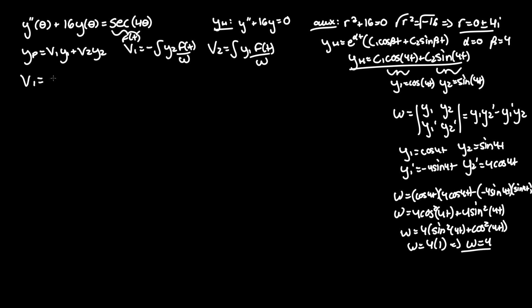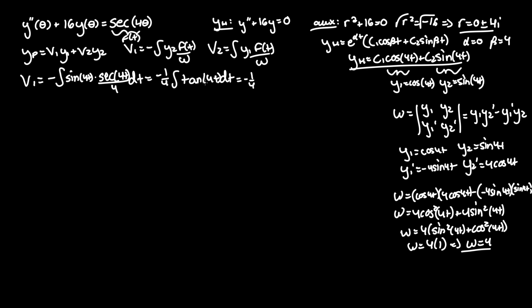Now for v1: v1 equals the negative integral of y2, which is sine of 4t, times f of t, which is secant of 4t, over the Wronskian of 4 dt. We'll let t equal theta since it's easier to work with t and substitute back at the end. This equals negative one-fourth integral of sine 4t over cosine 4t, which is the same as tangent of 4t. For the integral of tan of 4t, bring out the coefficient of one-fourth, and the result is negative ln of the absolute value of cosine 4t.